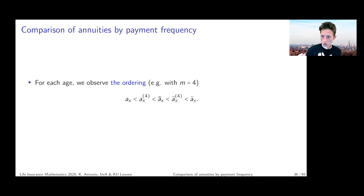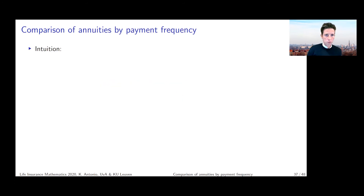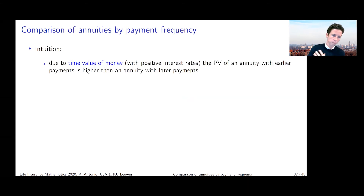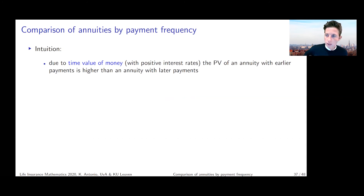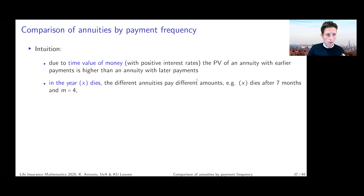So there are two things to keep in mind: first, financial discounting — the later the payment, the cheaper it is in EPV terms; and second, payment frequency and what happens in the year of death. To summarize: because of the time value of money, an annuity with earlier payments has a higher present value than one with later payments. And in the year of death, different annuities pay different amounts.